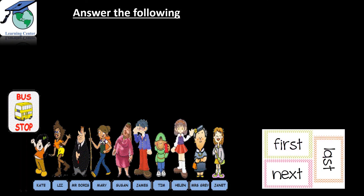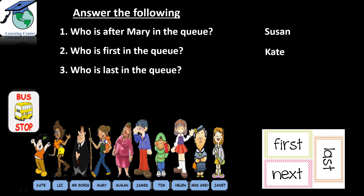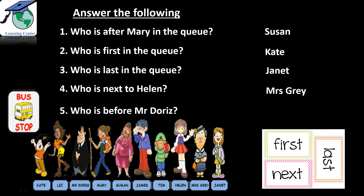Answer the following: who is after Mary in the queue? After Mary is Suzanne. Who is first in the queue? It is Kate. Who is last in the queue? It is Janet. Who is next to Helen? It is Mrs. Gray. Who is before Mr. Doris? It is Lee.